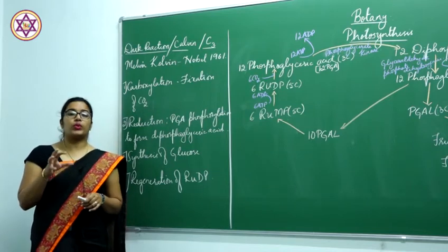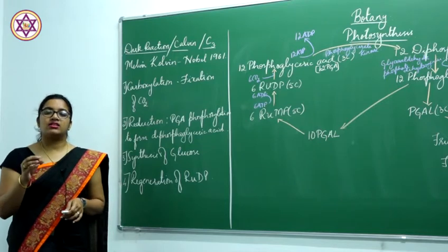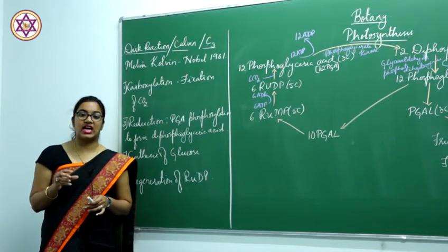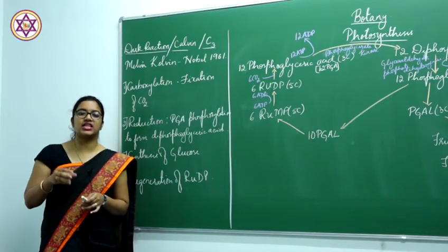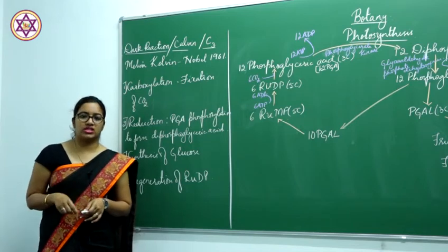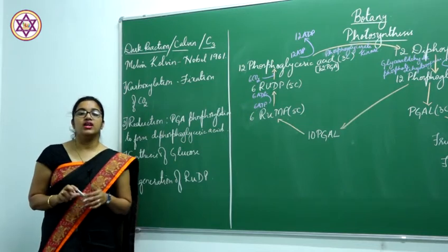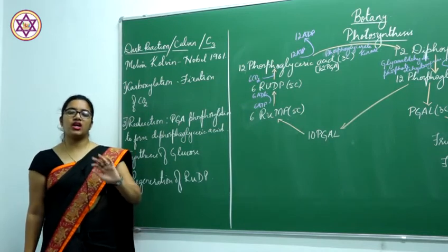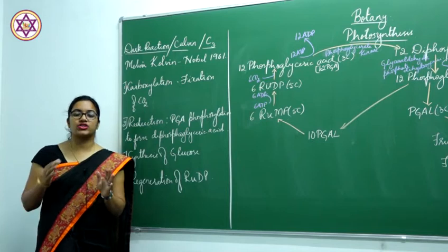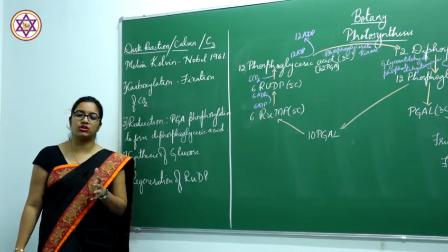When we were talking about photosynthesis, we said the reaction occurs in grana — that is inside the chloroplast in the photosystem PS1 and PS2. We were saying that light reaction and dark reaction both occur in the chloroplast.